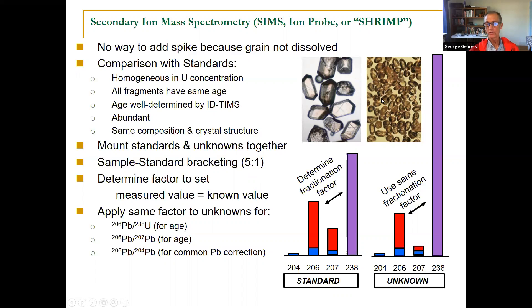So we call this standard sample bracketing. We usually do five unknown crystals. So five of these, one of those, five of these, one of those. Takes a little bit of extra time, but that's how we do the calibration. This allows us to get ages that are maybe 1% or 2%. There's no way we can get to tenth of a percent doing it this way.